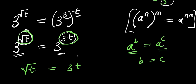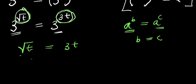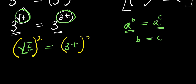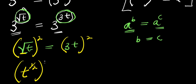The next step is to eliminate the square root. To do that, we raise both sides to the power of 2. The square root is the same as raising to the power of 1 over 2. So square root of t is like saying t to the power of 1 over 2, and this is raised to the power of 2.